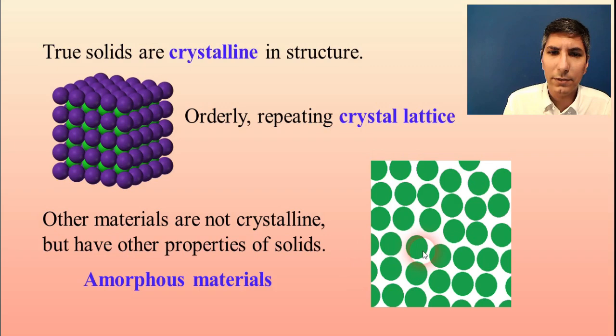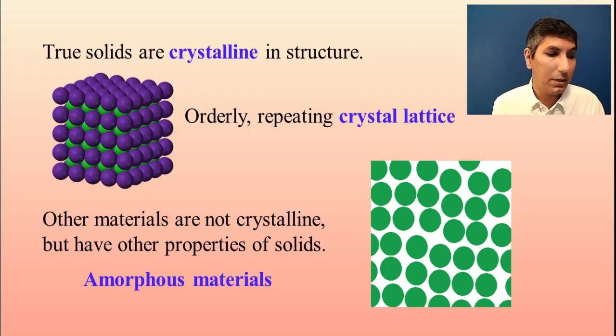These materials are best described as amorphous, and that would include things like plastics, a piece of paper. Perhaps some people would even describe glass as being somewhat amorphous as well.